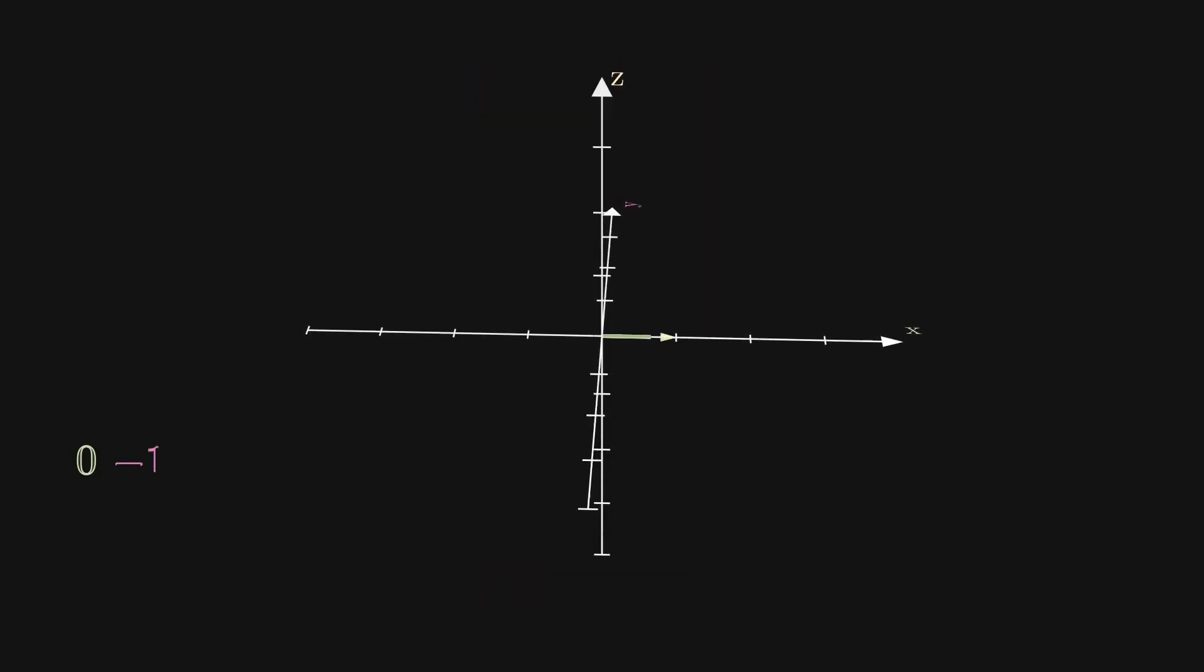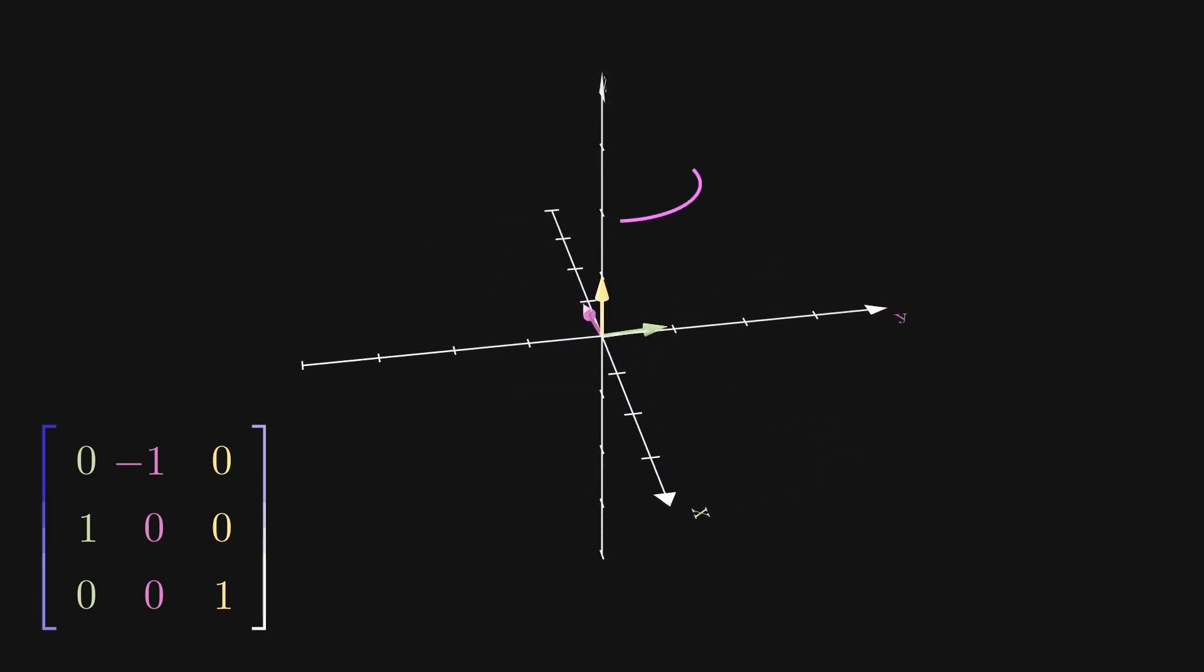To see what I mean, let's look at an example. This is the rotation by 90 degree transformation, which as you might suspect, rotates every point in 3D space around the z-axis 90 degrees.